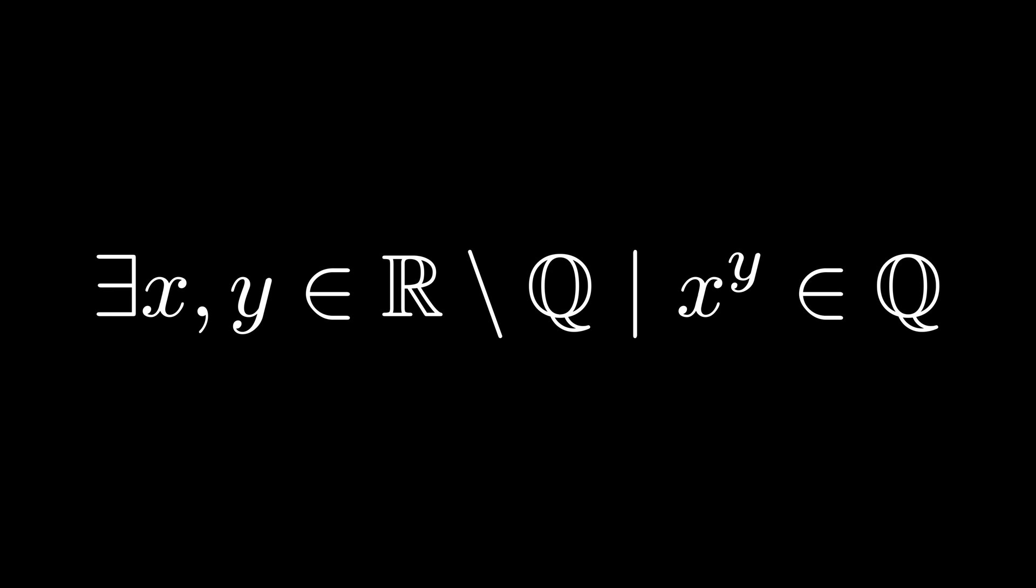So whether root 2 to the root 2 is rational or not, there exists at least two irrational numbers x and y such that x to the y is rational.